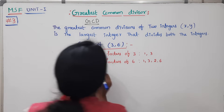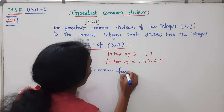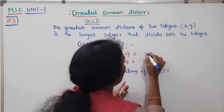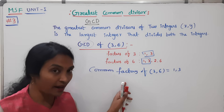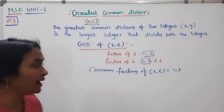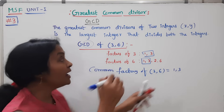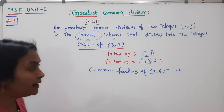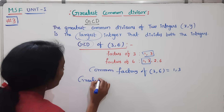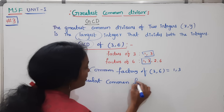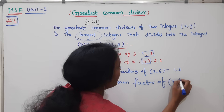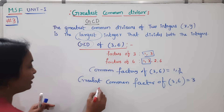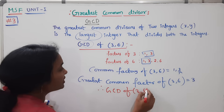The common factors of 3 and 6 are 1 and 3. But we need to find the greatest common factor — the largest value among the common factors. The greatest common factor of 3 and 6 is 3. Therefore, GCD(3, 6) = 3.